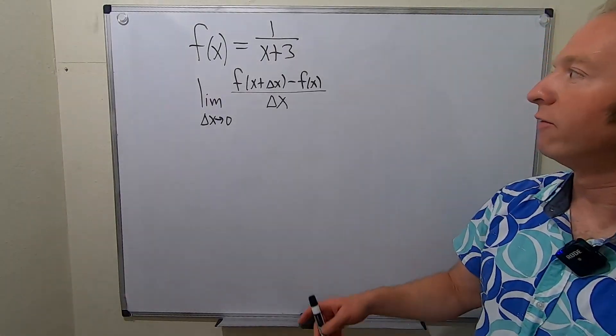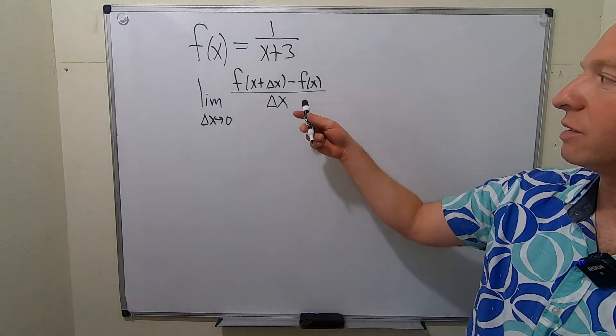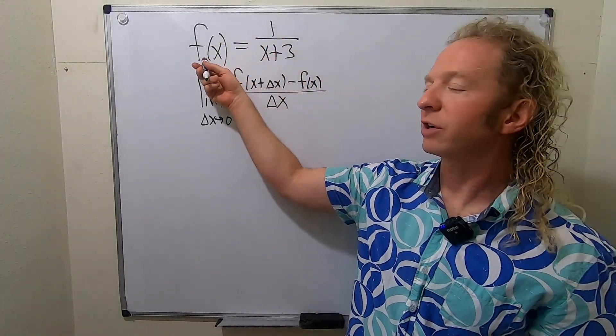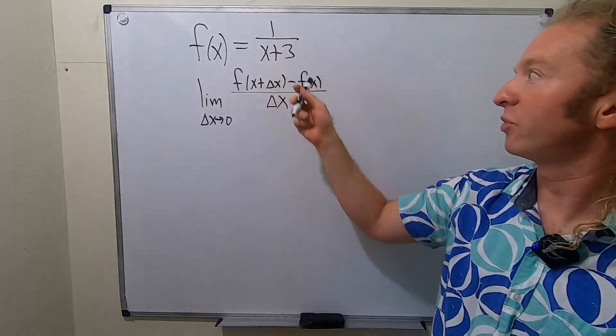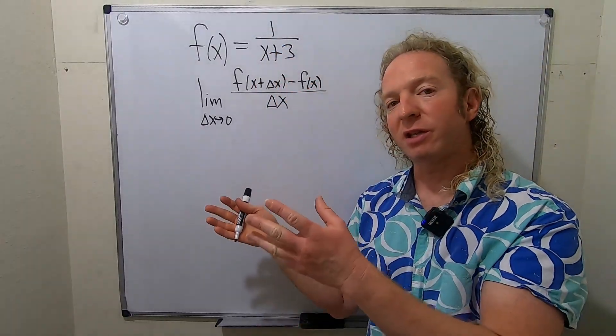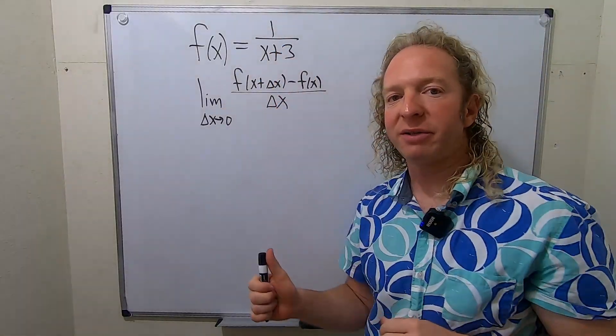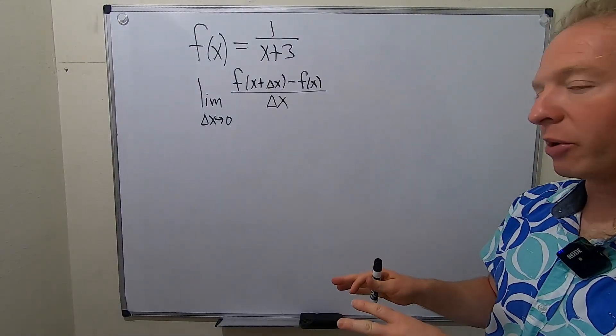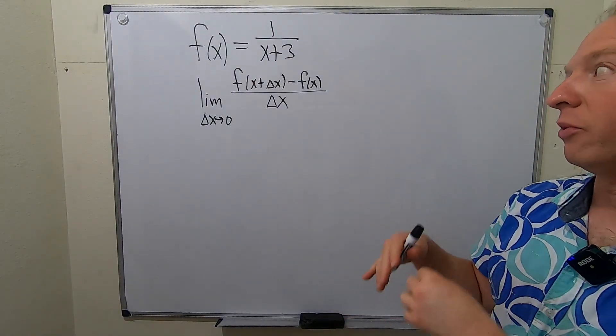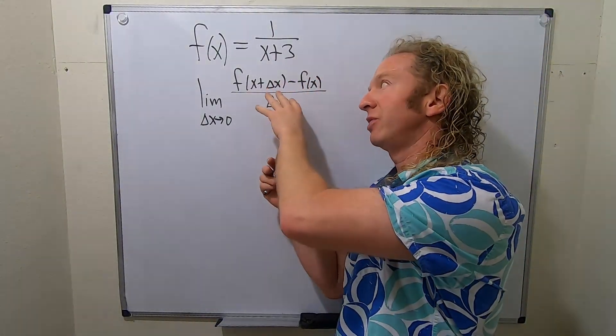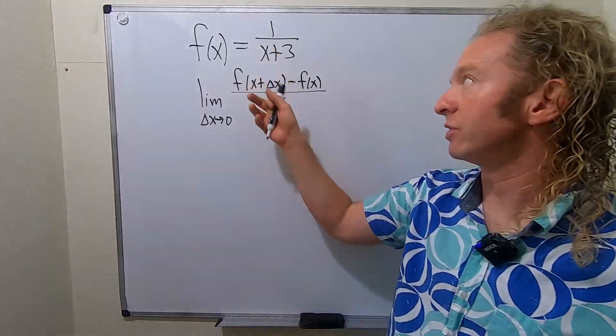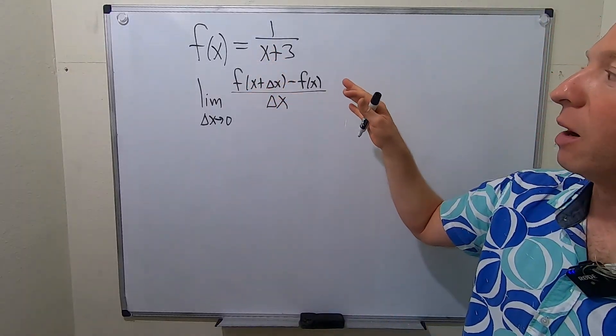In this video we're going to evaluate a limit. We're given the function f(x) = 1/(x+3) and we have to evaluate the limit that involves delta x. This is actually something called the derivative of the function. We're assuming when we do this problem that we don't know what that is, but if you did know you could take other approaches.